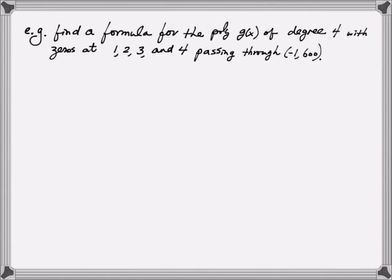In this next example, this is very similar to what we've just done there, the strategy that we use is very similar. We want to find a formula for the polynomial g(x) of degree 4 with zeros at 1, 2, 3, and 4 also passing through the point.